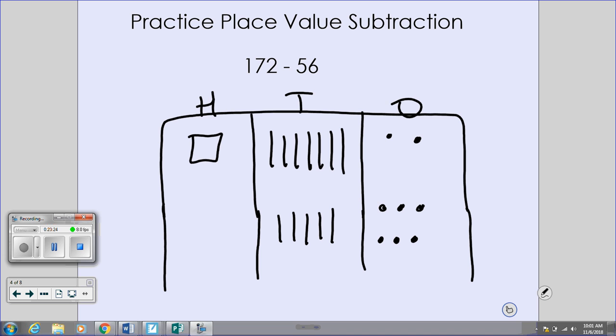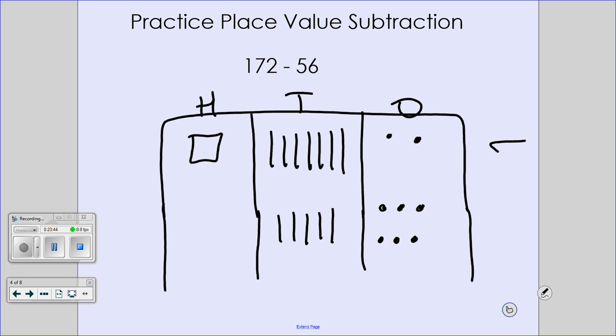So I set up my equation. I have one hundred and seventy-two subtract fifty-six. Remind me, where do I start again? With the ones column. And do I start with what's easy, or do I start with what's the total? What's the total. Where is my total? That top number. So I have two ones subtract six ones. Is that going to be easy-peasy for me? No. What do I need to do? I need to steal a ten, so I have more ones to use.